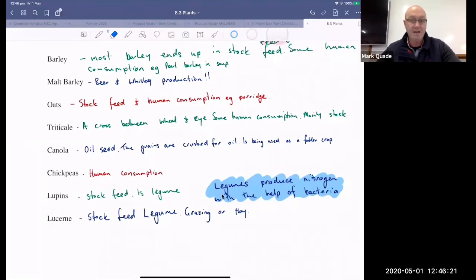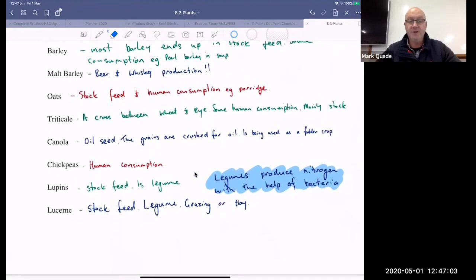Chickpeas, human consumption. It's a legume. Lupin, stock feed. It's a legume. Now, legumes, I understand you haven't been taught about, but basically legumes have a symbiotic relationship with the bacteria, so rhizobium bacteria. Now, the plant provides a home for the bacteria, so they colonize the roots, and then the bacteria produce a form of nitrogen that the plants can use. So they take atmospheric nitrogen and turn it into a form that the plants can use. So lucerne is grazing or hay.